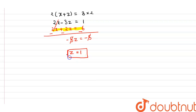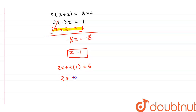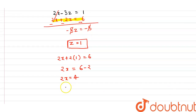To find x, substitute z equals 1 into 2x plus 2z equals 6: 2x plus 2 equals 6, so 2x equals 4, giving x equals 2.